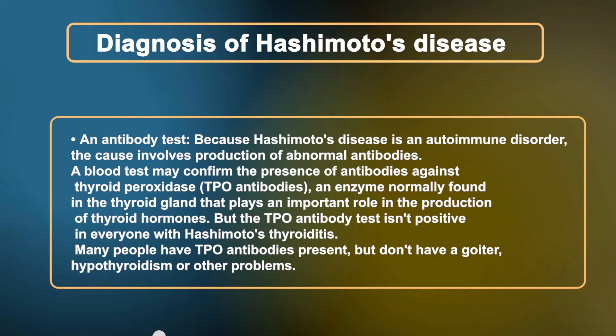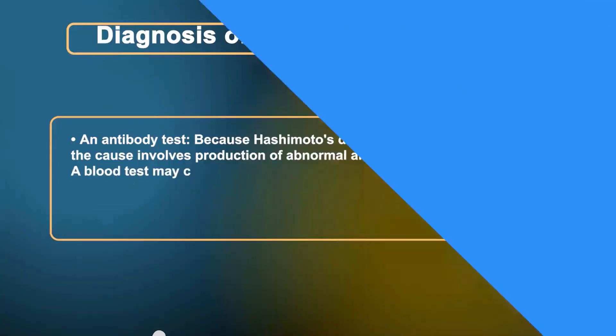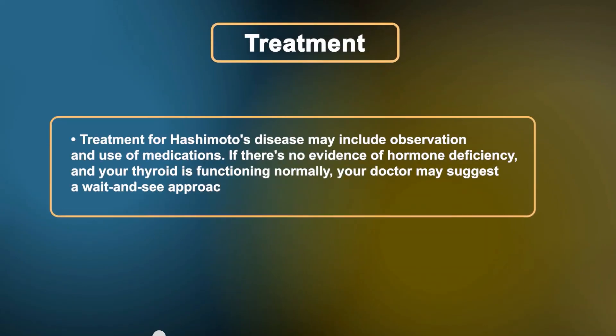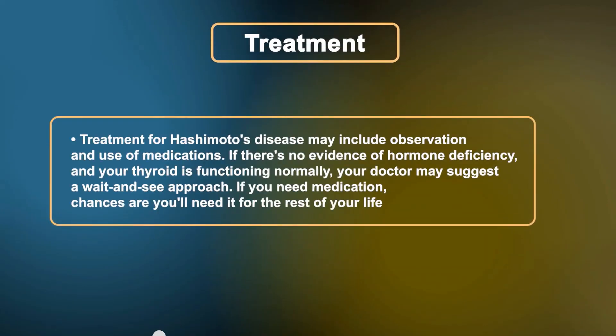Treatment for Hashimoto's disease may include observation and use of medications. If there is no evidence of hormone deficiency and the thyroid is functioning normally, the doctor may suggest a wait-and-see approach. If medication is needed, chances are it will be required for the rest of the patient's life.